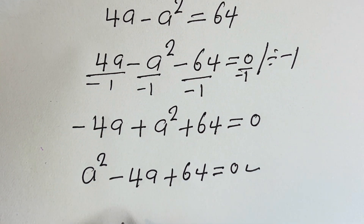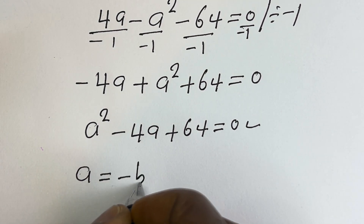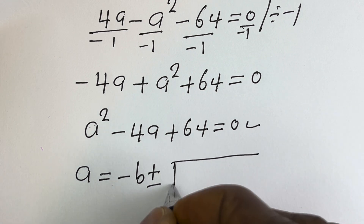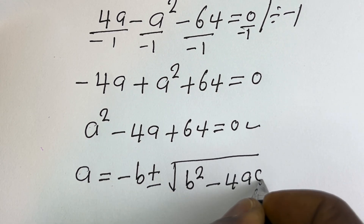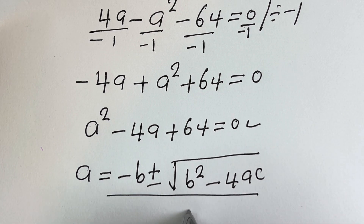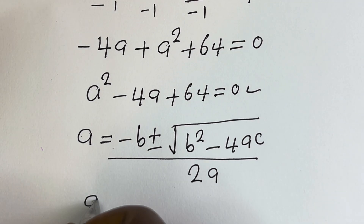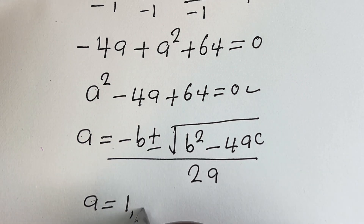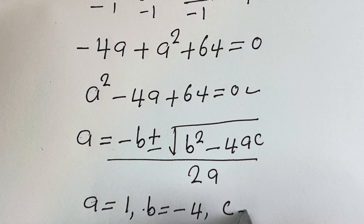Let's solve this using the quadratic formula: a equals negative b plus or minus square root of b squared minus 4ac, all divided by 2a. From our equation, the coefficient a is equal to 1, b is equal to minus 4, and c is equal to 64.